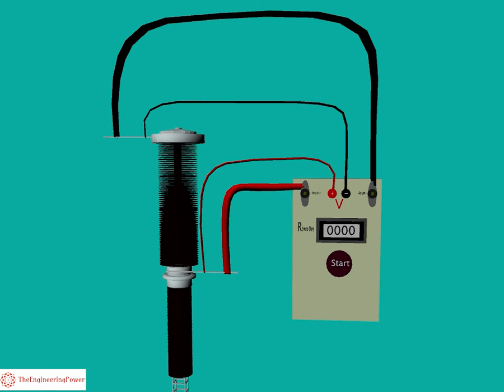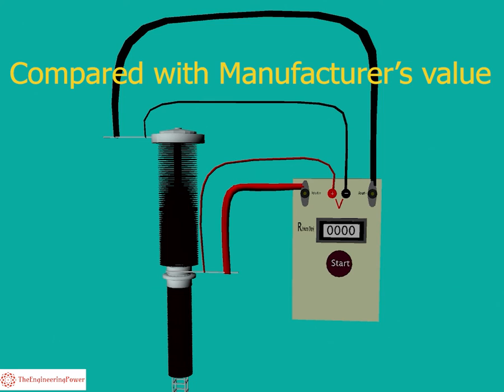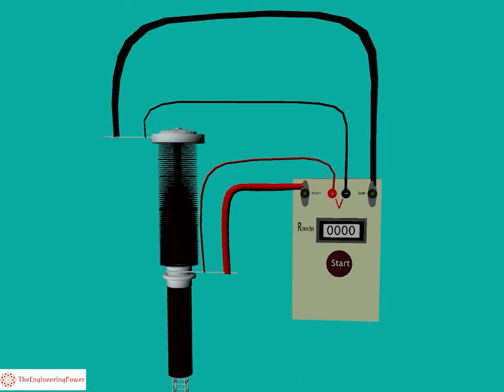The resistance value is calculated using Ohm's law. On the test set, we just press the R button to show the resistance. The measured value of the contact resistance is compared with the value given by the manufacturer. The value is also compared with the previous measured value.